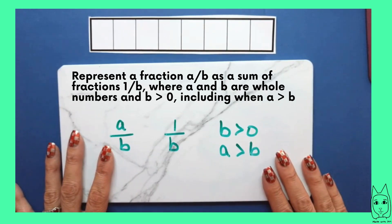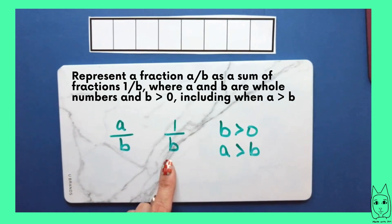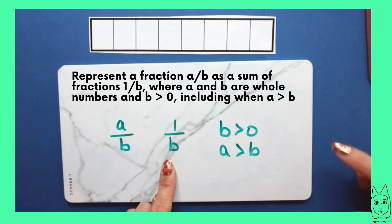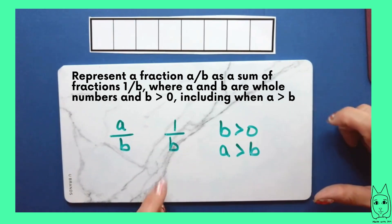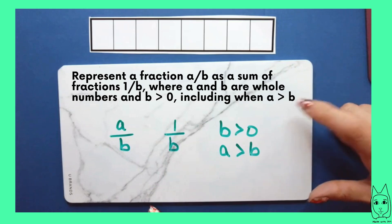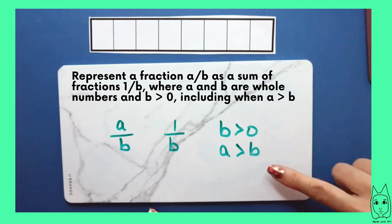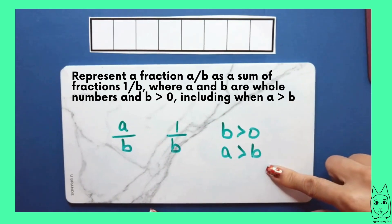In this video, we are going to represent a fraction a over b as a sum of fractions 1 over b, where a and b are whole numbers and b is greater than zero, including when a is greater than b.